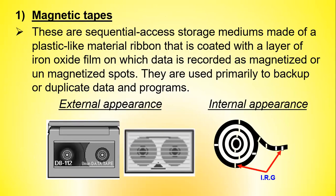Magnetic tapes are a sequential access storage medium made of a plastic-like ribbon coated with a layer of iron oxide film on which data is recorded as magnetized or unmagnetized spots. They are used primarily to back up or duplicate data and programs.